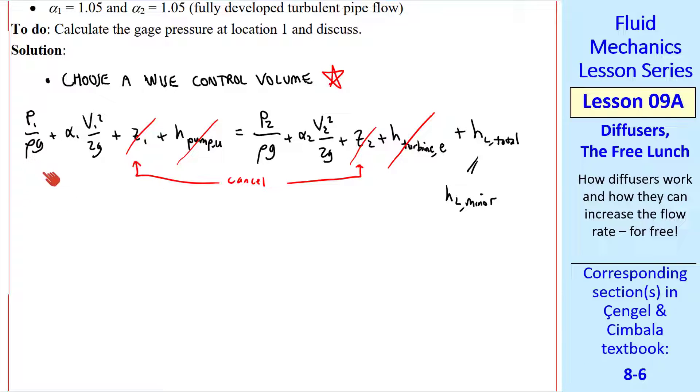We were asked for gauge pressure at location one. I can subtract atmospheric pressure over rho g from both sides of the equation. And since P two is equal to P atmosphere, P gauge two equals zero.